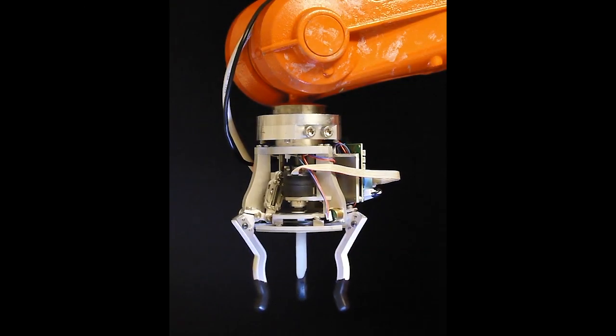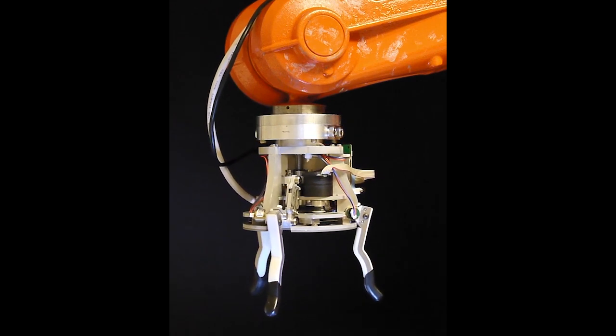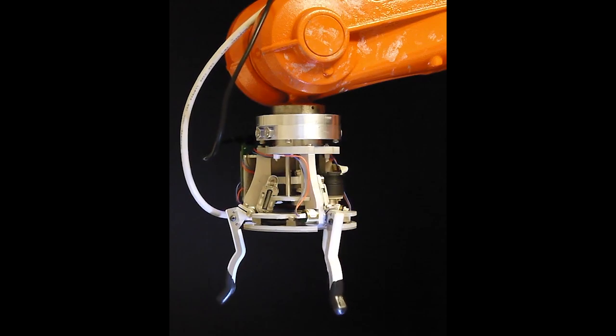Here at the Manipulation Lab at Carnegie Mellon University, we are exploring regrasp actions for simple grippers, like the MLAB hand shown here, which uses only 1 actuator.